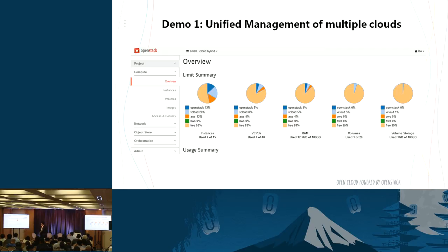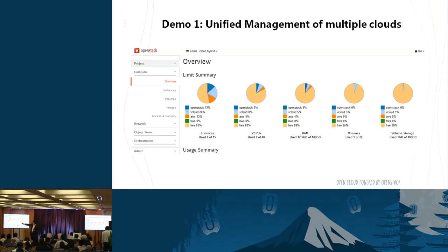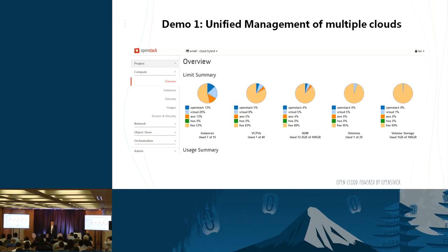The instance provisioning is done. Within minutes, a single virtual machine can be seamlessly provisioned in any backend cloud. Back on the initial dashboard, you can see the resource distribution across different backend clouds in terms of virtual CPUs, RAM, volumes, and volume capacities — as percentages for the specific cloud tenant. This fully leverages the ecosystems and capabilities of the OpenStack community.